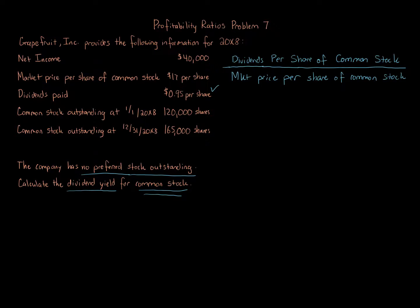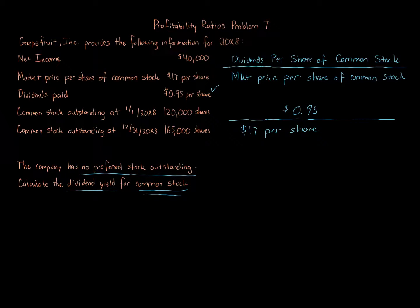We're told $0.95, so the numerator is $0.95 per share of common stock. We divide that by the market price per share, which is $17 per share of common stock. Taking $0.95 per share divided by $17 per share gives us 5.59 percent.